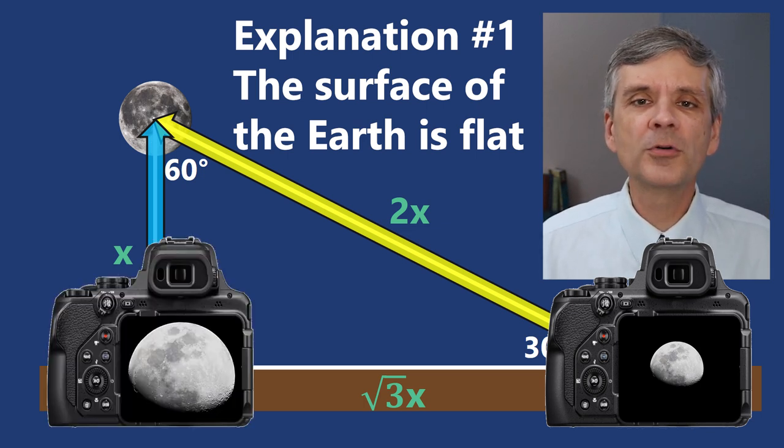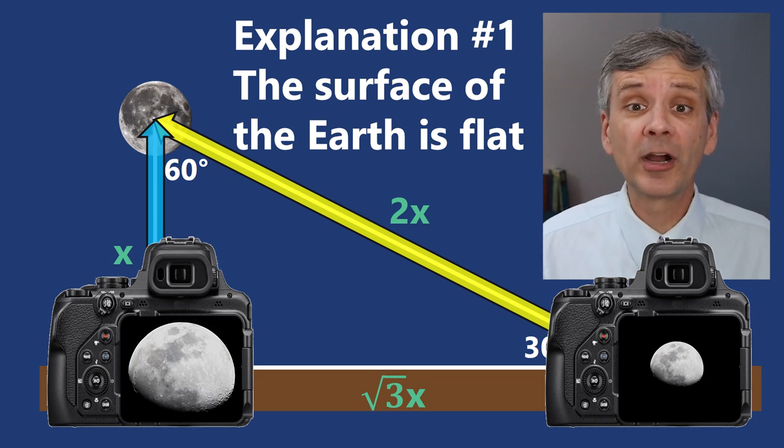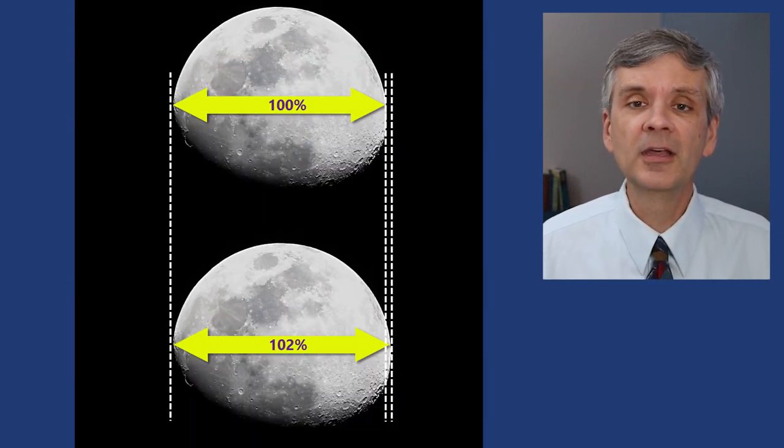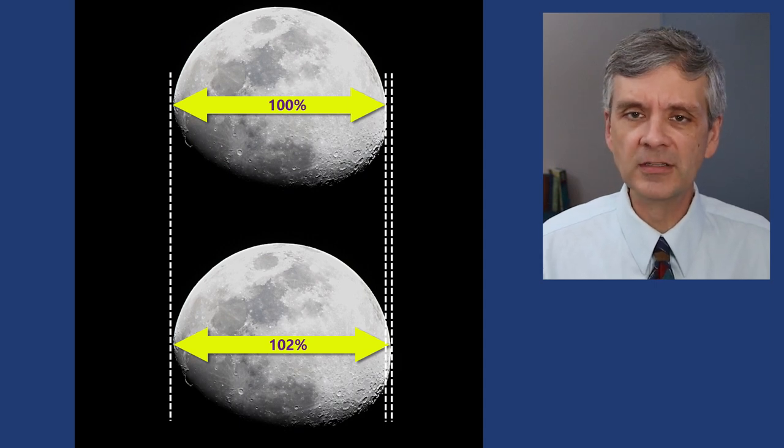In fact, the moon appears almost exactly the same size from everywhere on earth at any moment in time. That suggests that it's about the same distance from both cities.